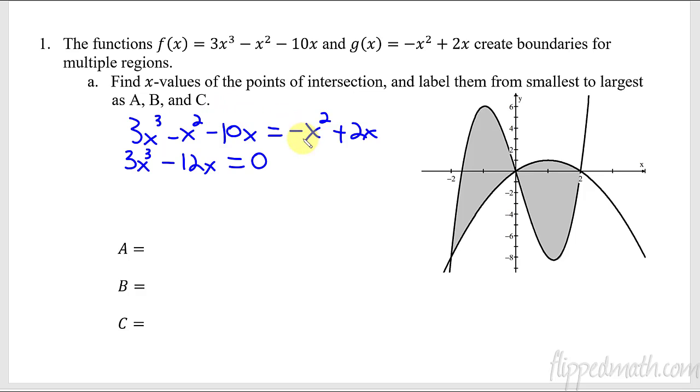The nice thing here was the x-squares cancel. And now we can factor out what they have in common. And I see that they've both got a 3x I can factor out. So that leaves me with an x-squared minus 4 equals zero. And now if you solve this with the zero product property, 3x has to equal zero, which gives you x equals zero.